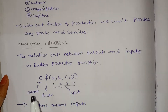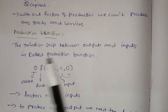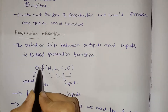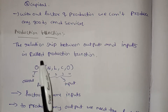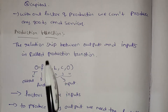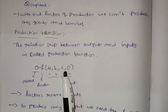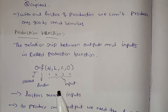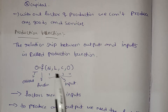Production function is the relationship between output and input. Here, output is what is produced, and input includes land, labor, capital, and organization. We give inputs and get output — that is the production function.